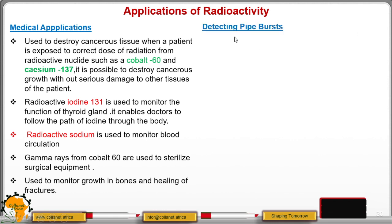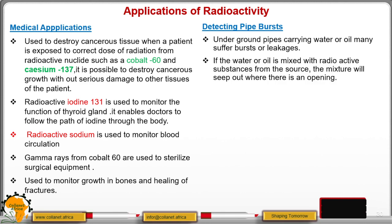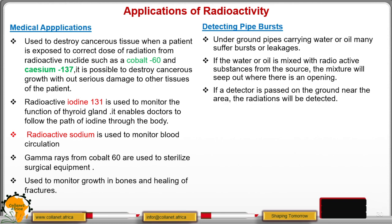The second application is detecting pipe bursts. Underground pipes carrying water and oil may have leakages or bursts. To detect these without digging up the pipes, the water or oil is mixed with a radioactive substance. A detector is then placed on or moved along the path of those pipes on the upper part. If radiations are detected, you will know there is an opening in the pipe.